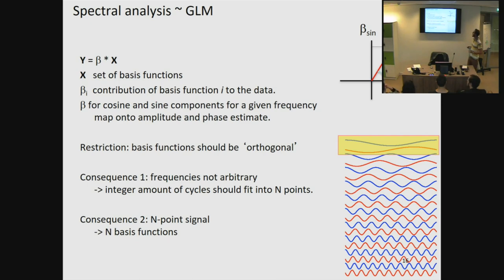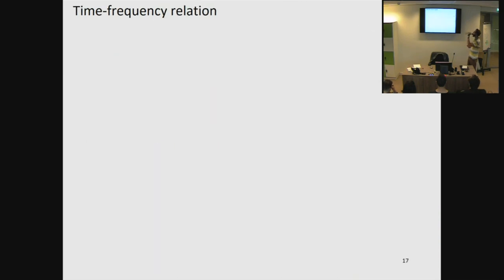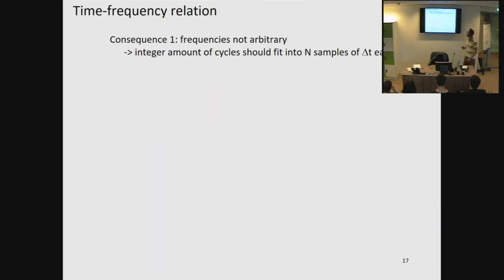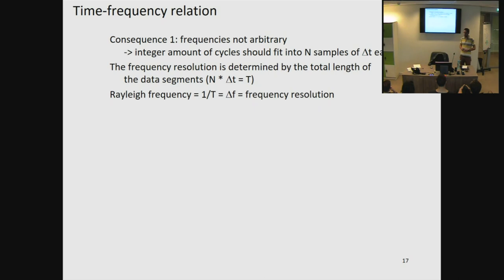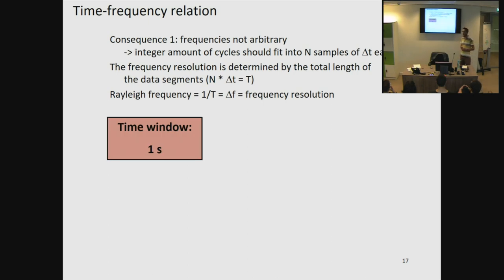The first consequence is that we cannot just randomly choose which frequencies we want to estimate — an integer amount of cycles has to fit in the signal. The second consequence is that for an n-point signal, we can only use n basis functions. This defines our frequency resolution: the smallest difference in frequencies that we can estimate, determined by the length of our data segment. This is called the Rayleigh frequency — if we divide one by the total length of our segment, we get our frequency resolution. For example, if our time window is one second, our frequency resolution is one hertz.